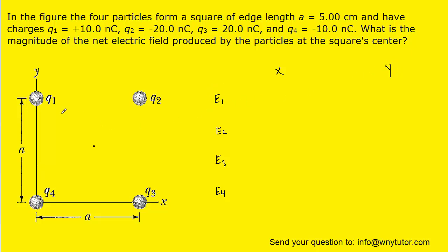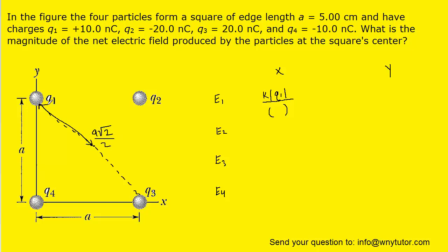Let's start with the electric field E1 produced by charge Q1. That's going to equal k multiplied by the magnitude of the charge Q1, divided by the distance squared. If we extend that line all the way, we can see that we form a nice right triangle. The sides of that right triangle are marked A and A, and through the Pythagorean theorem, the hypotenuse is A times the square root of 2. We only want half that distance since we're going from Q1 to the center, so the distance is A√2 divided by 2.